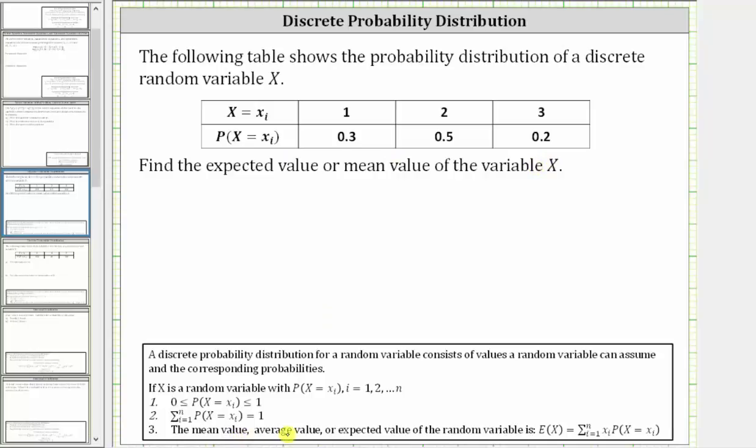The mean value, average value, or expected value of the random variable x is E(x) equals the summation from i equals 1 to n of x sub i times the probability x equals x sub i.